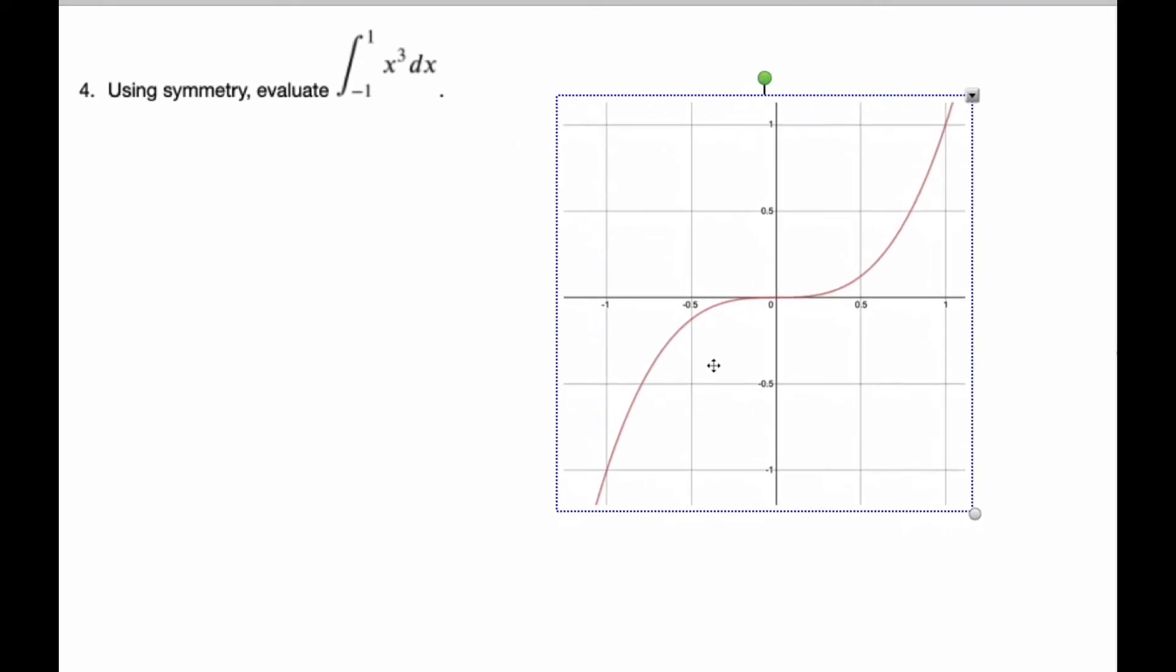So when I have this scenario here, I'm asked to use symmetry. Well, if I break up this graph, I'm looking basically for the signed area between negative 1 and positive 1.